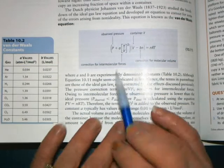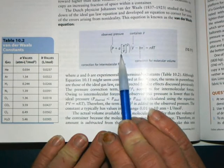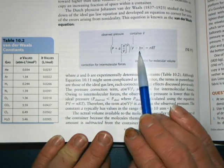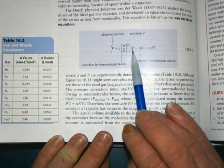So the Van der Waals equation has an adjustment factor added to pressure and an adjustment factor subtracted from volume.